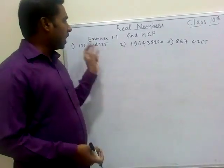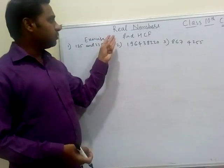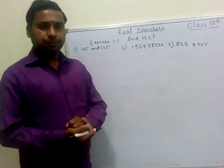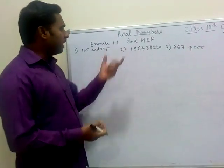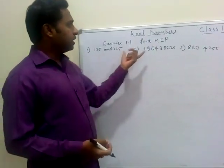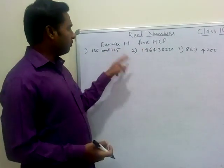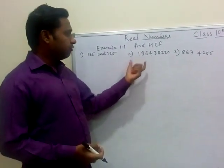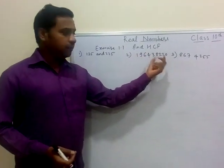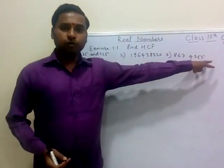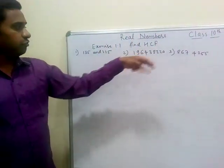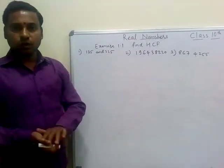Today we are going to start with Exercise 1.1 of Real Numbers. In this exercise we are going to find the HCF of 135 and 225, 196 and 38,220, and 867 and 255. We have to find the HCF by using Euclid's division algorithm.